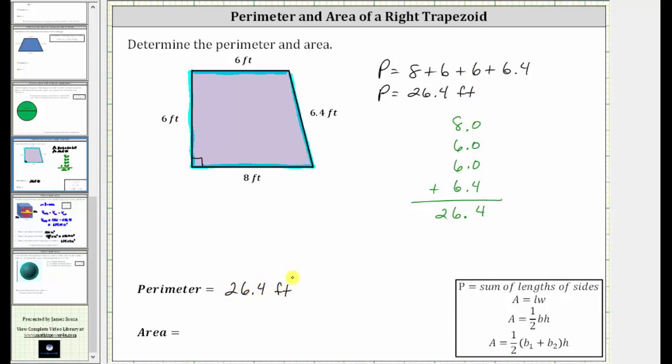And now let's determine the area of the trapezoid. The area of a trapezoid is equal to one-half times the sum of the two bases times the height, where the two bases are the two parallel sides.